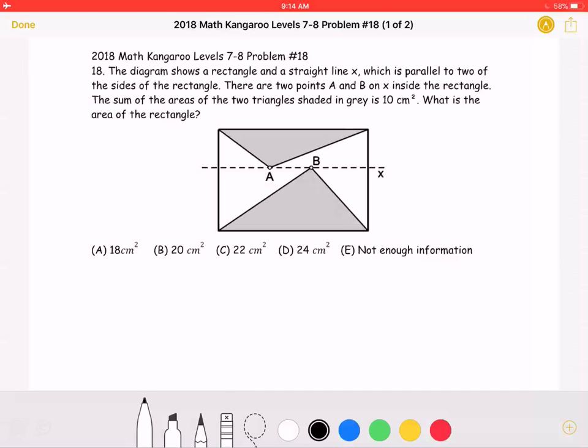The sum of the areas of the two triangles shaded in gray is 10 centimeters squared. What is the area of the rectangle?